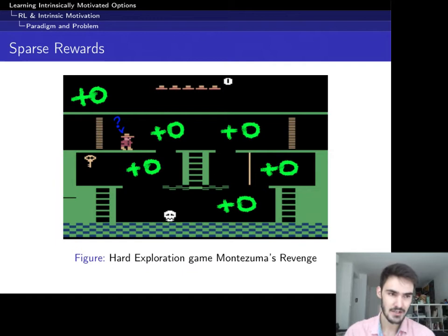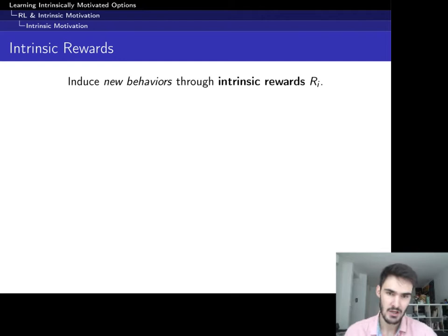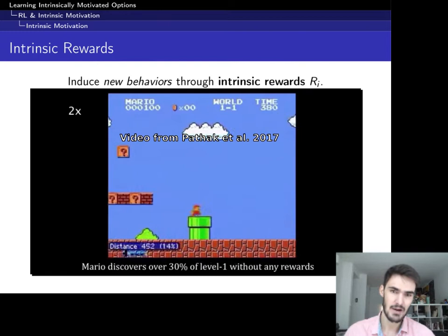We would like to bring about interesting behaviors even before reward has been observed. And there is actually a very intuitive way to tackle this problem, which is to create artificial rewards, which we are going to call intrinsic rewards. Basically these rewards have the objective to just induce interesting behaviors.